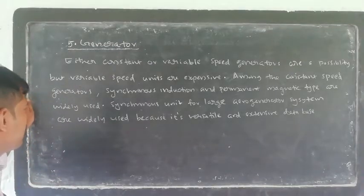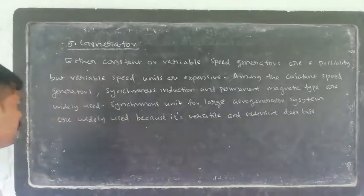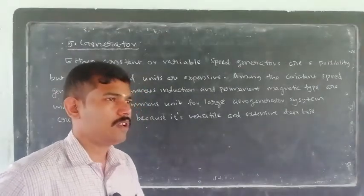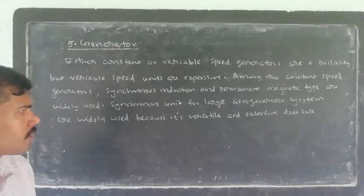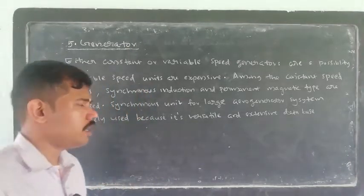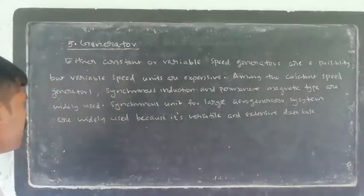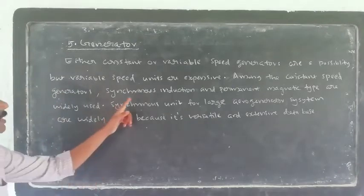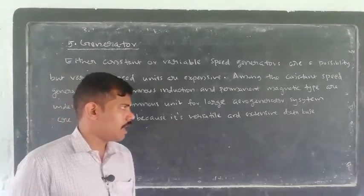Permanent magnetic type generators are widely used. Synchronous units are used in aero generator systems. Either constant or variable speed generators are a possibility, but variable speed units are expensive. So we use constant speed generators widely. Among the constant speed generators, synchronous, induction, and permanent magnetic types are widely used. Synchronous units for large aero generator systems are widely used because they are versatile and have an extensive database.